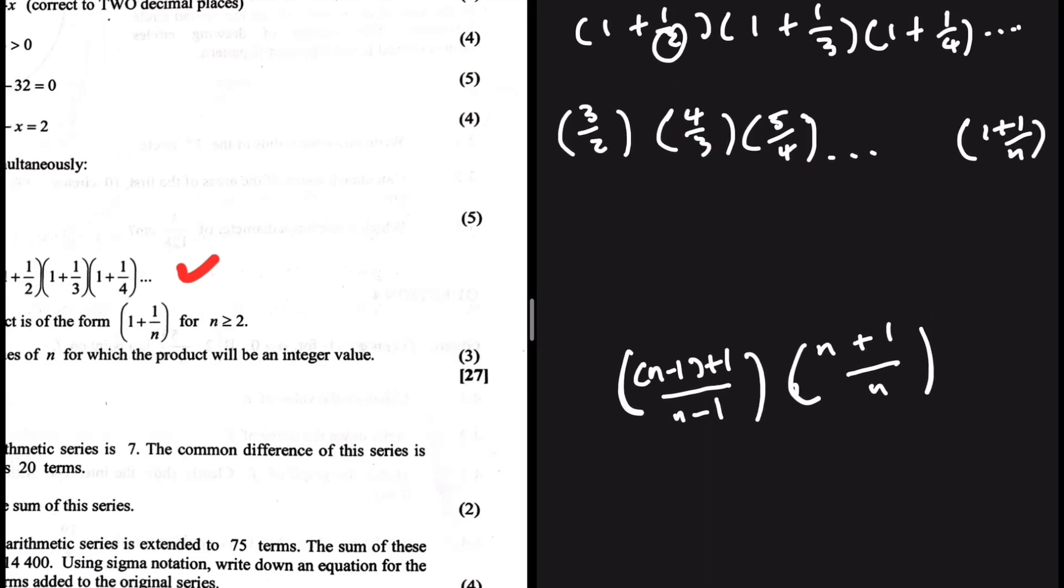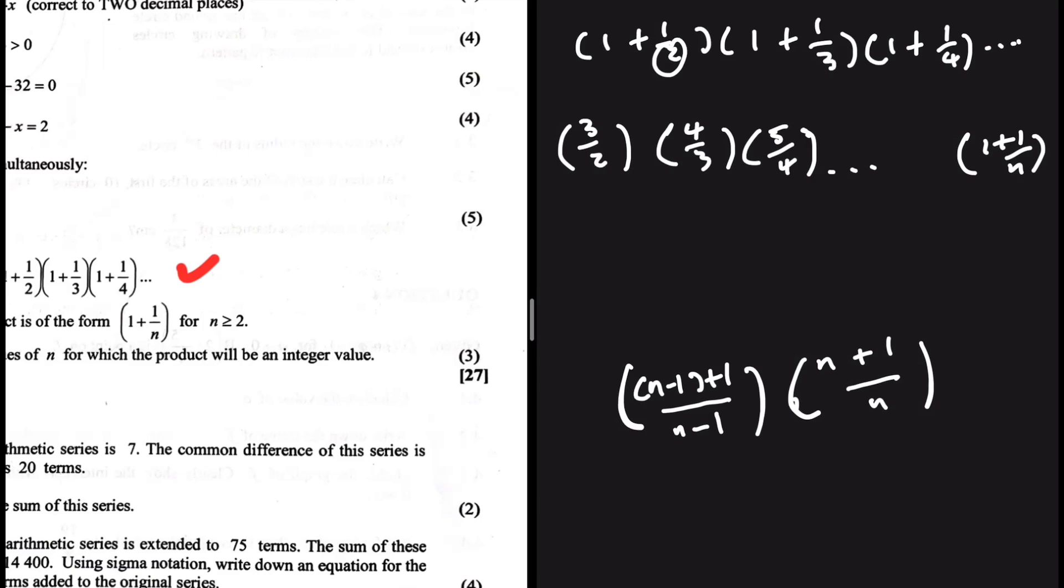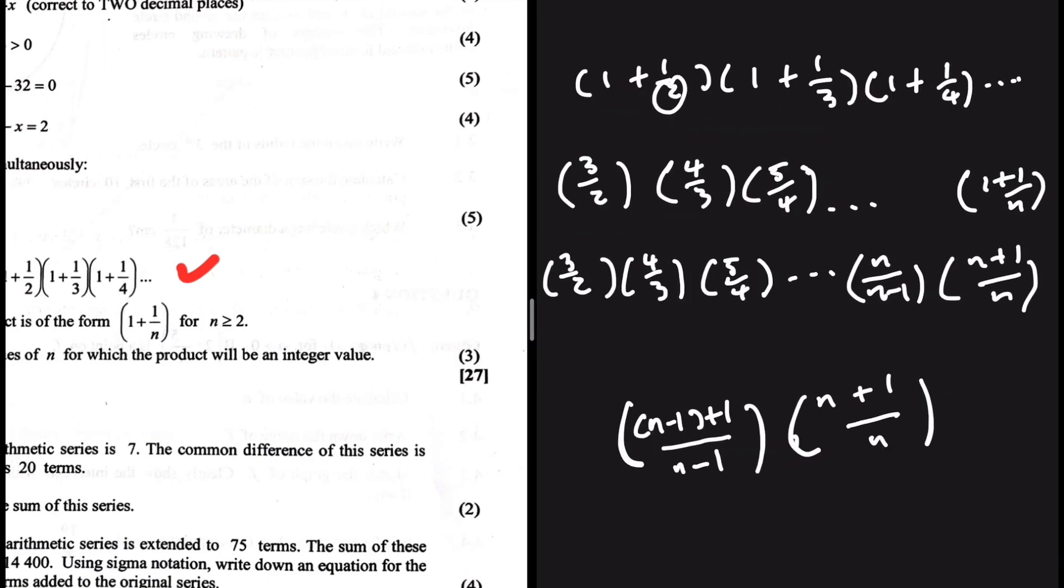So we are seeing that the first term is 3 over 2. It is followed by 4 over 3. And then after that, we have 5 over 4. And then we have some terms. Before the last term, n minus 1 plus 1 is just n. So we have n divided by n minus 1. And then after n divided by n minus 1, we have n plus 1 divided by n. That's what we have. So let me erase this and show you what happens here.